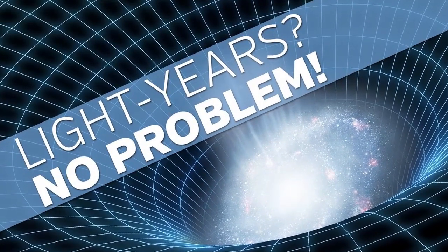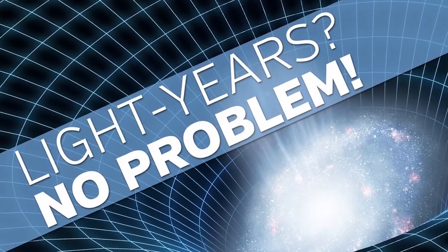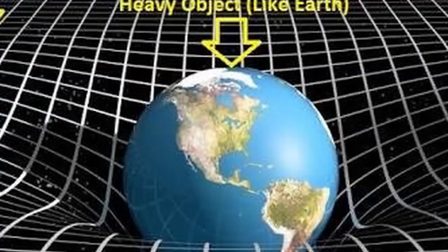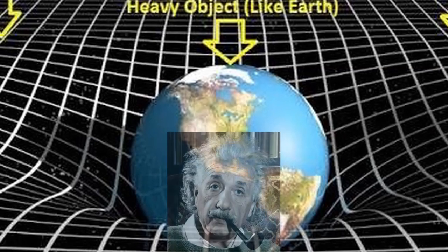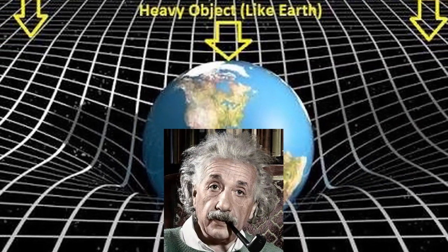Creationists, however, can grant the evolutionists that the galaxies we see are actually billions of light years away and that the speed of light is constant. But evolutionists forget that Albert Einstein proved that although the speed of light is constant, time is not.